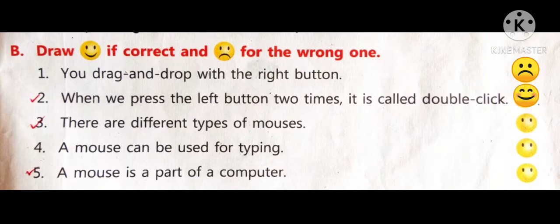Three number. There are different types of mouses. Yes, it is also correct. Four number. A mouse can be used for typing. No. So, the answer is wrong.